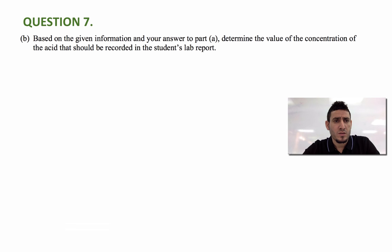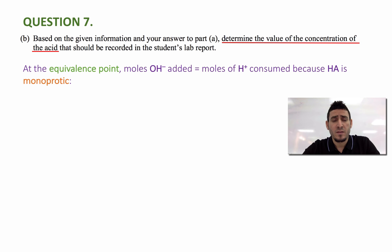Now let's take a look at the second question. It says based on the given information and your answer to part A determine the value of the concentration of the acid that should be recorded in the student's lab report. Now we know that this is titration and at the equivalence point the number of moles of OH minus added is going to be equal to the number of moles of H plus consumed since the acid is monoprotic. Now the number of moles of H plus can be calculated by the concentration or the molarity multiplied by volume and in a similar way we can find the number of moles of OH minus. So in this case we can say that the molarity times volume for the acid equals the molarity times volume for the base.